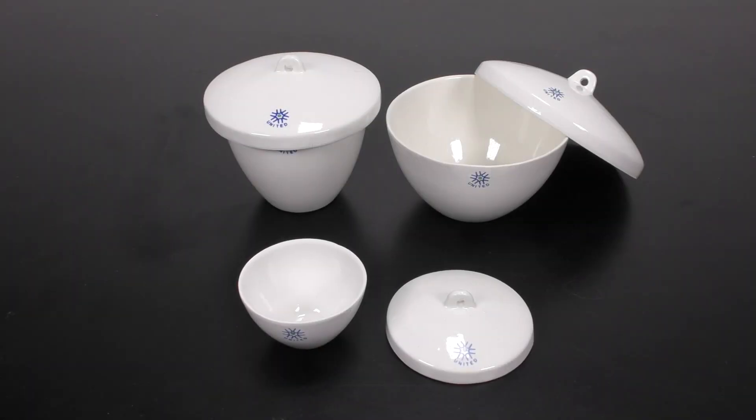A crucible is a vessel that is used to heat a sample up to very high temperatures. This can be because you want to speed up a reaction or you want to simply dry out a sample.